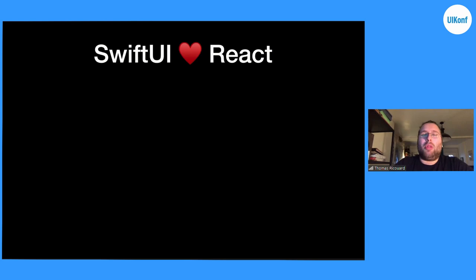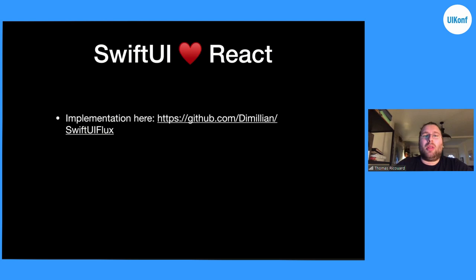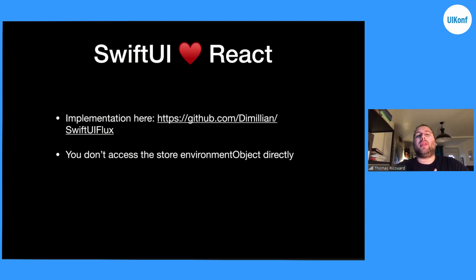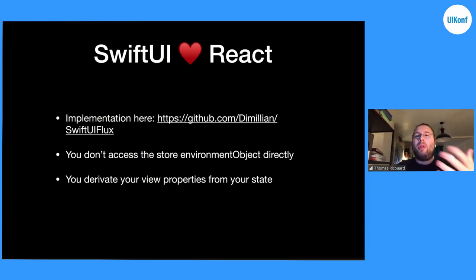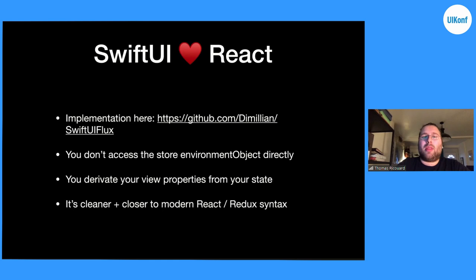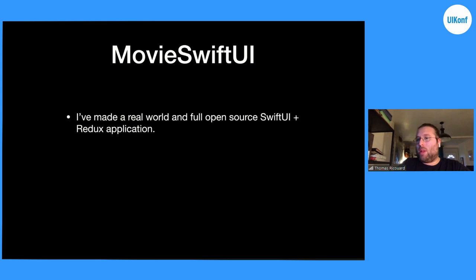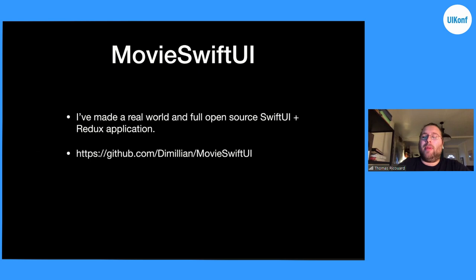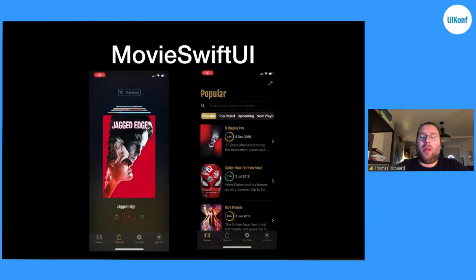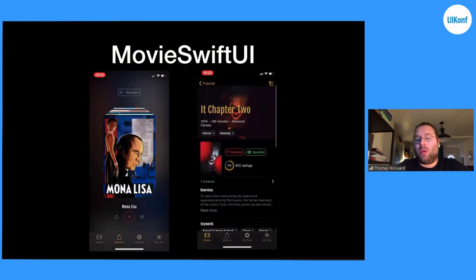This works but it's not really close to the React Redux syntax we have today — it's not very pretty. I wanted to make it closer to what we have in React and Redux architecture, so I made an open source library called SwiftUI Flux. The goal is to not access the store directly. Instead, in your view you have a new component called ConnectedView, and the goal is to extract the properties you need from your store state and compute them into local view properties. It's cleaner and much closer to the modern React Redux syntax. To illustrate this, I made an app called MovieSwiftUI last summer — it's fully open source on GitHub, and you can clone it, launch it, and see how it all works with lots of animations and views, all working using Redux.